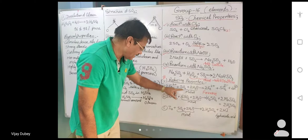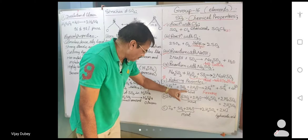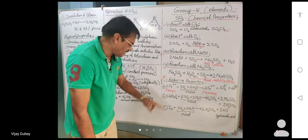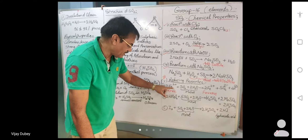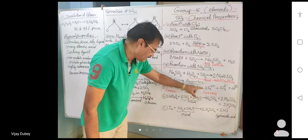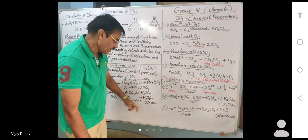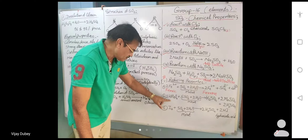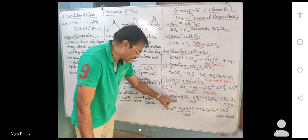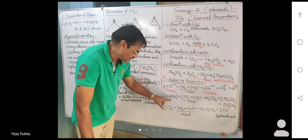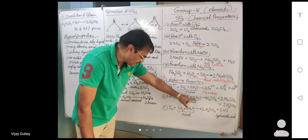Moist sulfur dioxide reduces ferric ion into ferrous ion. It also reduces potassium permanganate. Moist sulfur dioxide reacts with potassium permanganate in a reduction reaction.